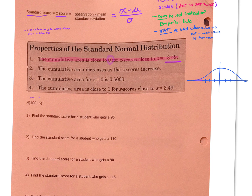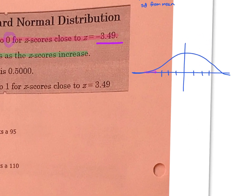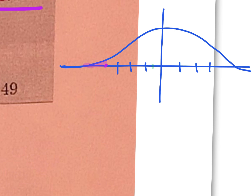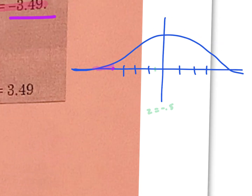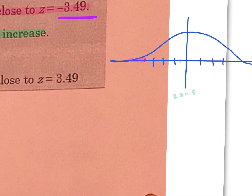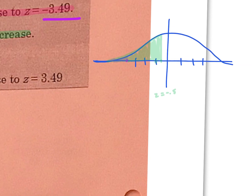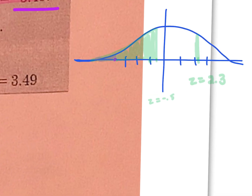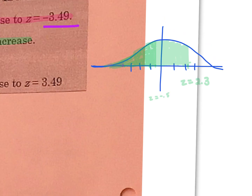Secondly, the cumulative area increases as the z-scores increase. That should make sense. If we have a z-score of negative 0.5, our cumulative area is from that particular location and lower — all of that region. Then if we compare that to a z-score of say 2.3, that gives us an area from that location and everything lower. Obviously that cumulative area — the area from as far left as possible up to that location — is going to have to be bigger. That's what this property is telling us.